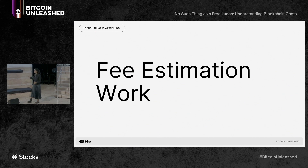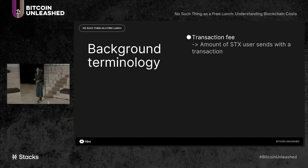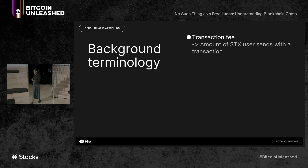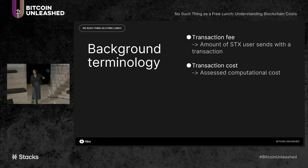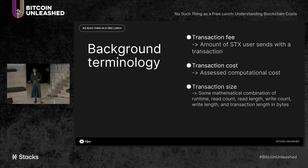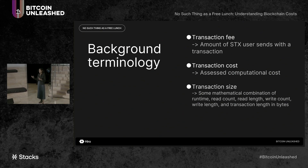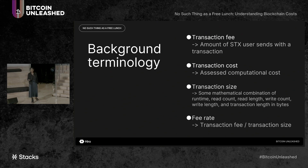Moving on to the fee estimation work, let's go over some background terminology. A transaction fee is the amount of STX that a user sends along with a transaction to incentivize miners to process it. The transaction cost is the assessed computational cost of running that transaction — runtime, read length, read count, write length, and write count. The transaction size is distinct from the transaction cost: it's a mathematical combination of those five cost parameters plus the transaction length in bytes, resulting in a single scalar value. The fee rate is computed by taking the transaction fee and dividing it by the transaction's size — giving you the fee per unit of transaction size.